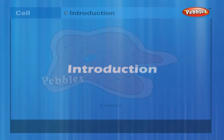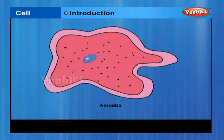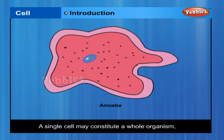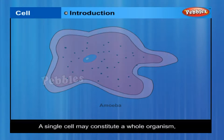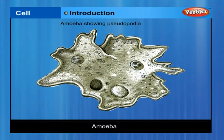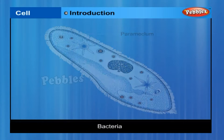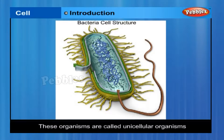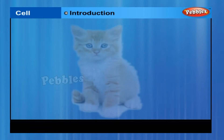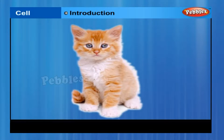It is now known that a single cell may constitute a whole organism, as in amoeba, paramecium and bacteria. These organisms are called unicellular organisms — uni meaning single. On the other hand, many cells group together in a single body and assume different functions in it to form various body parts in multicellular organisms.